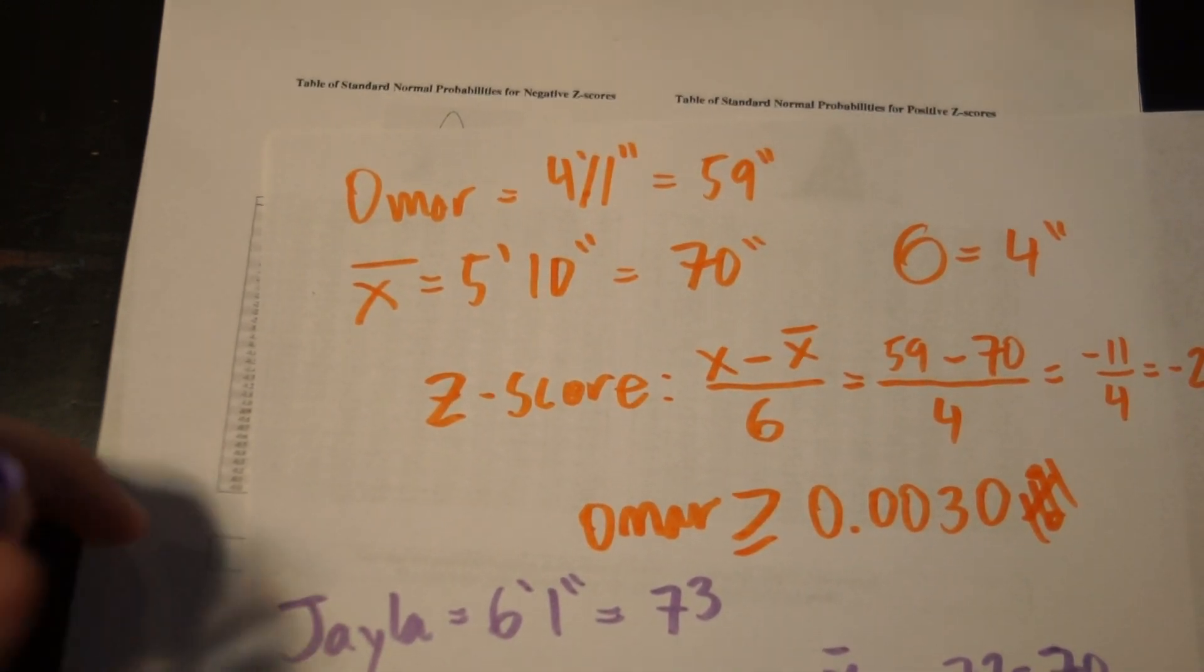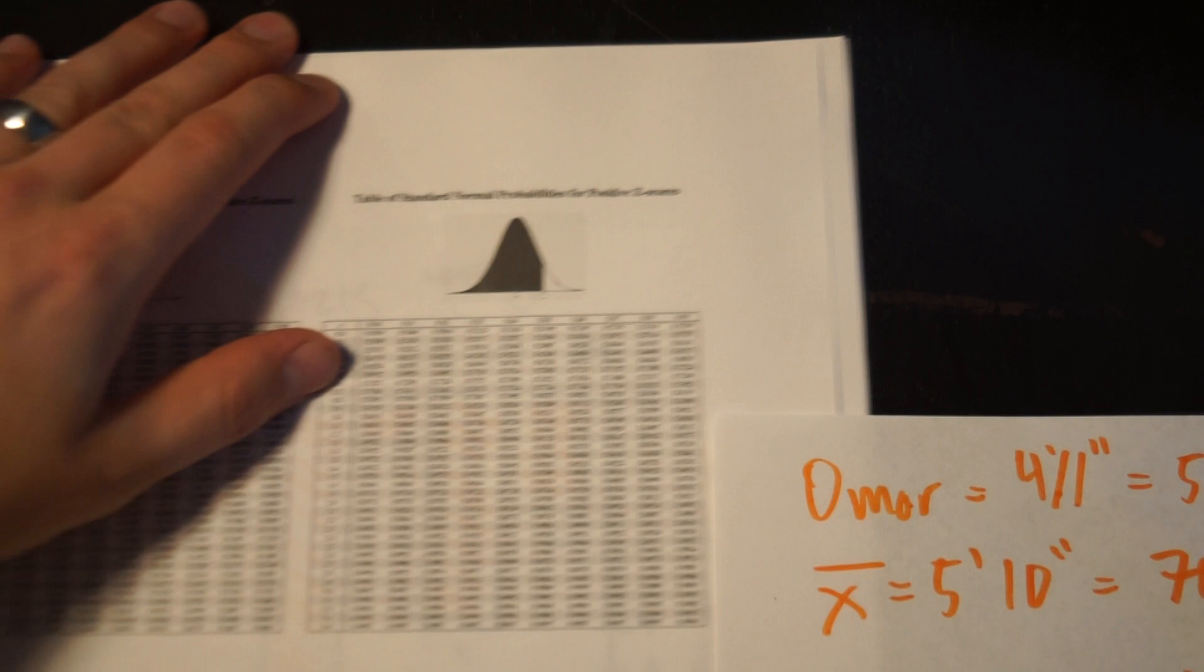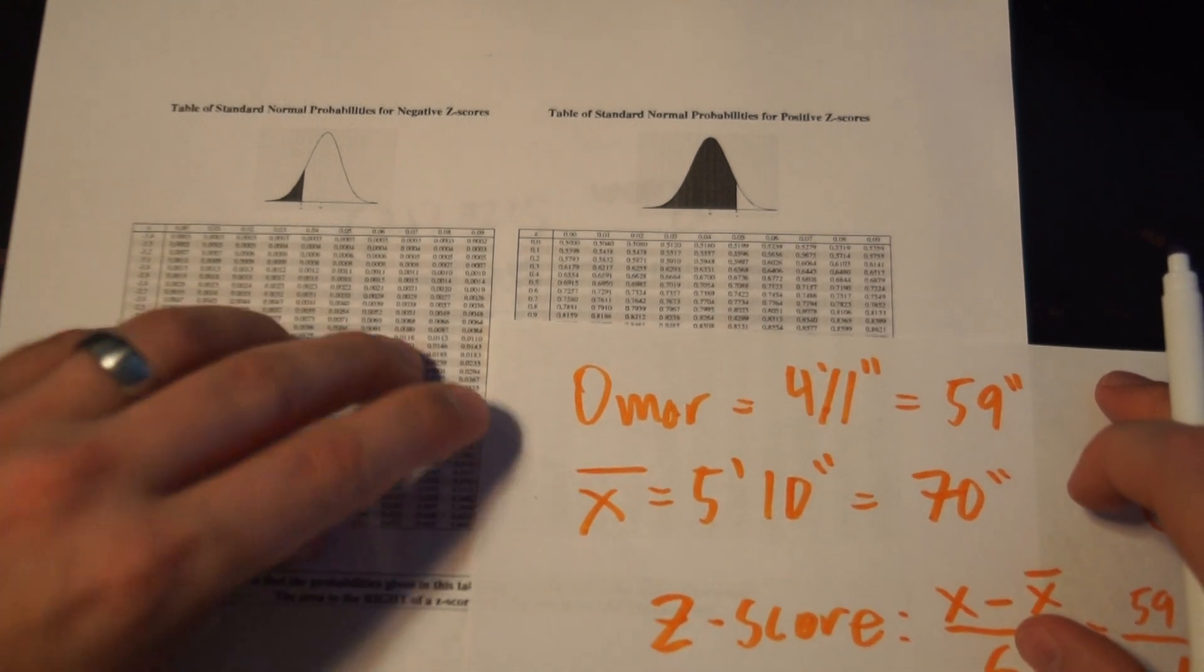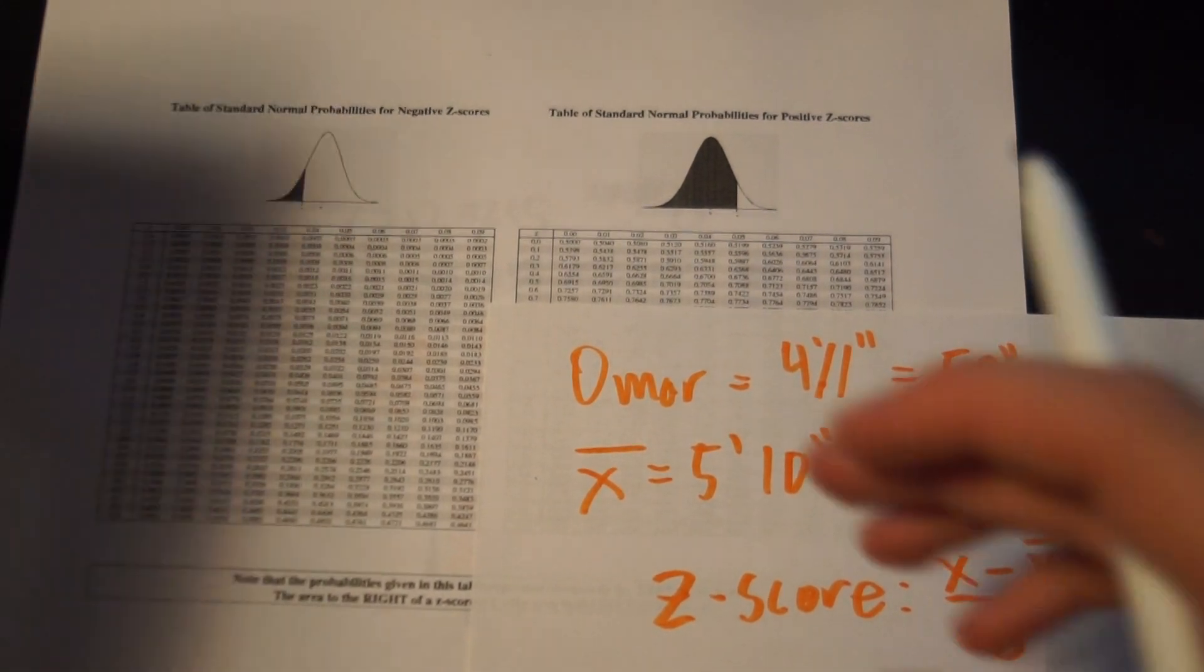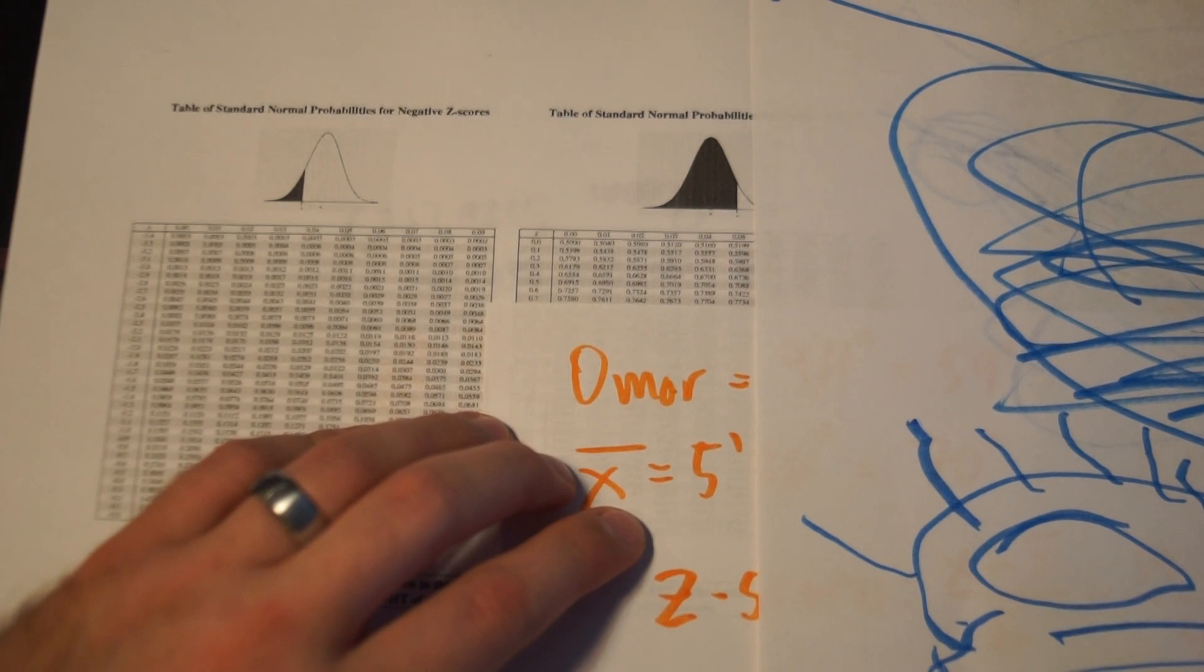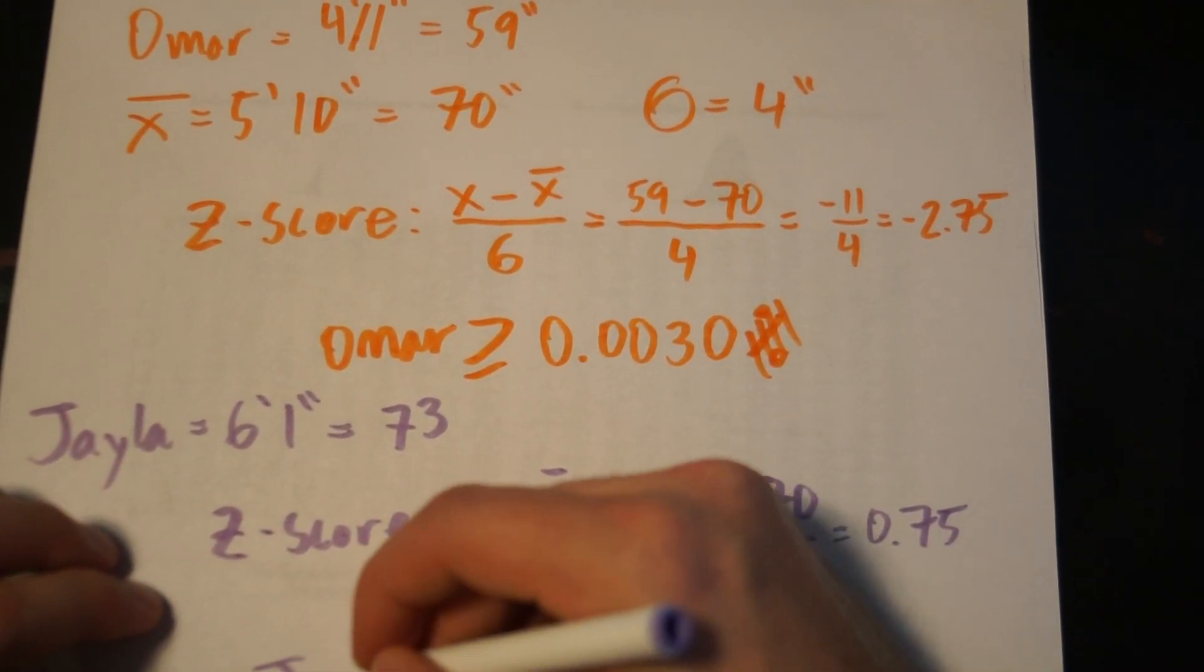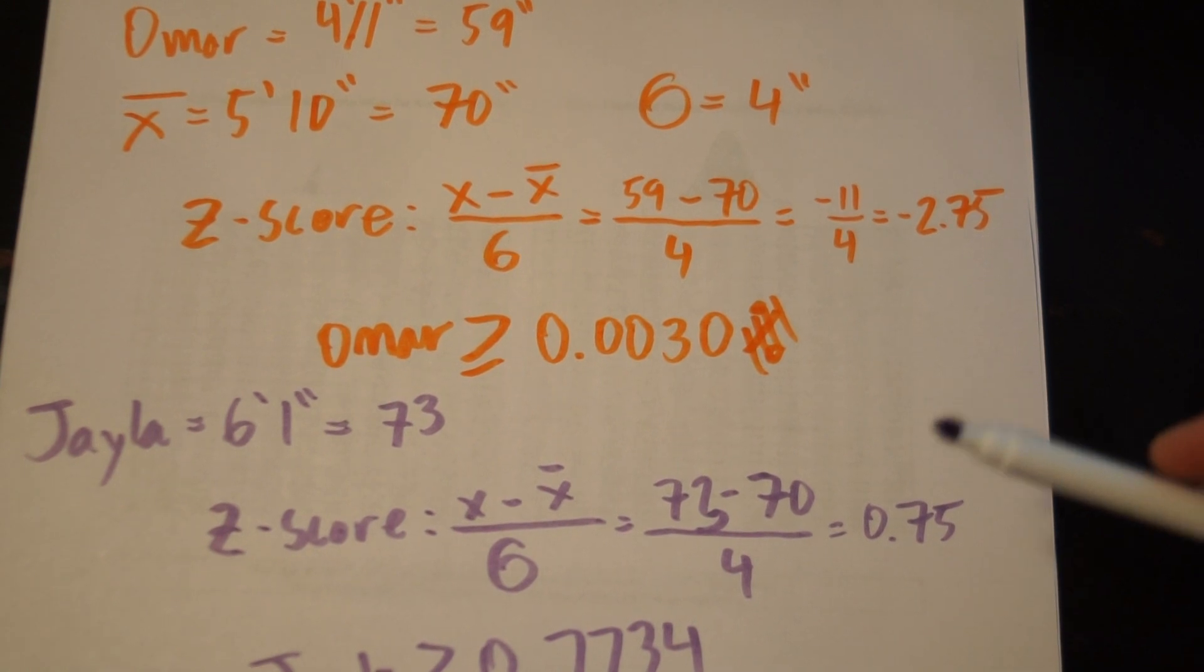So let's go ahead and find what percentage of the population Jayla is taller than. So I need to go to the positive z-score side, and I'm going to find 0.7, and I'll use my son's drawing again, 0.75, and it's 0.7734. So from this information, we can assume that Jayla is taller than or equal to 0.7734 of the population.